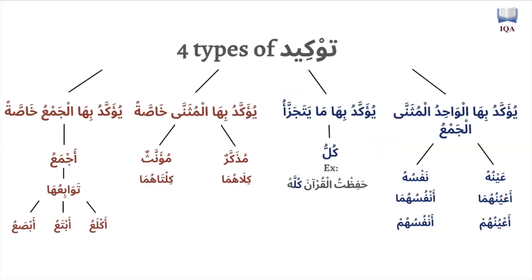There are four types of tawqid. The first type is used to emphasize what is singular (wahid), what is dual (muthanna), and what is plural (jama'a). For example, ja'a Zaidun nafsuhu or ja'a Zaidun a'aynuhu — both mean 'him specifically.' Nafs and a'ayn can each be used to emphasize a singular thing and will be roughly translated as 'himself' or 'itself.'